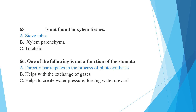Sieve tubes are not found in xylem tissues. We know that higher plants have two types of vascular bundles: xylem and phloem. Xylem does not have sieve tubes.